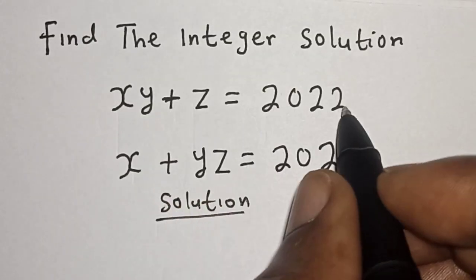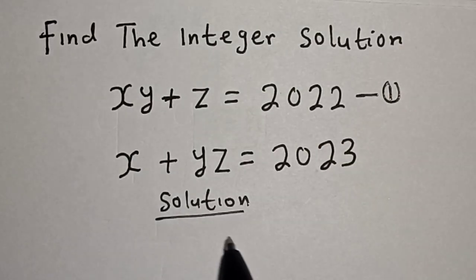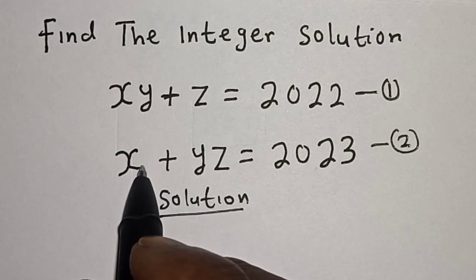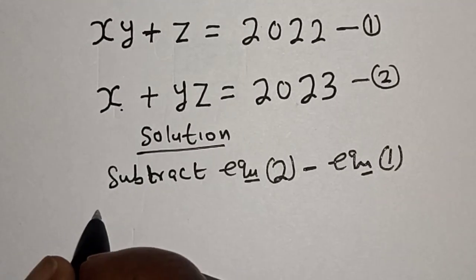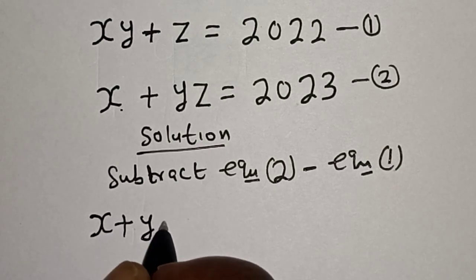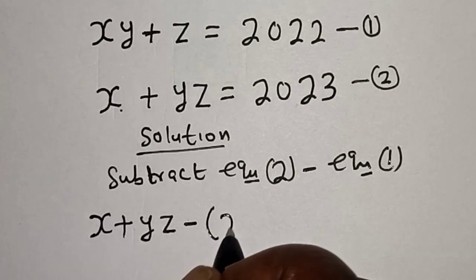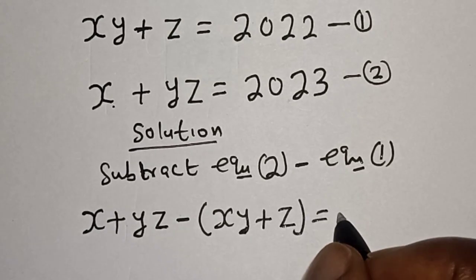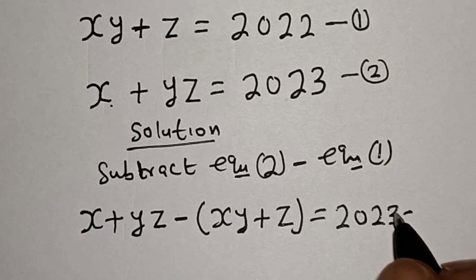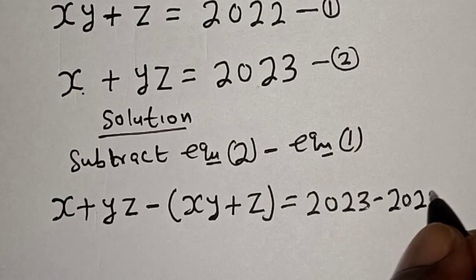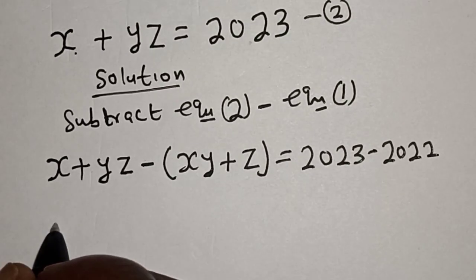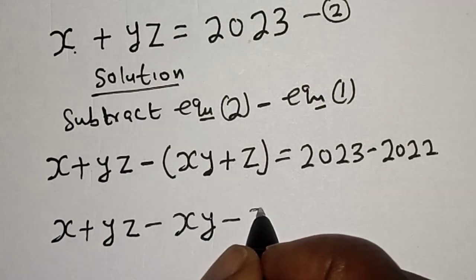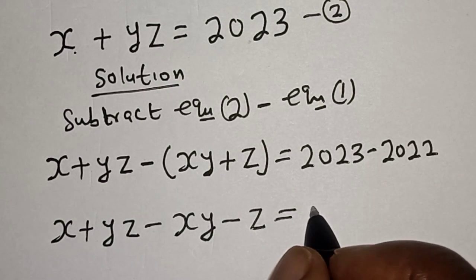So x·y + z is equal to 2022 — let's call this equation one. And x + y·z is equal to 2023 — let's call this equation two. Then let's subtract equation two from equation one. We have x + y·z minus x·y + z, which equals 2023 minus 2022, and that is equal to one.